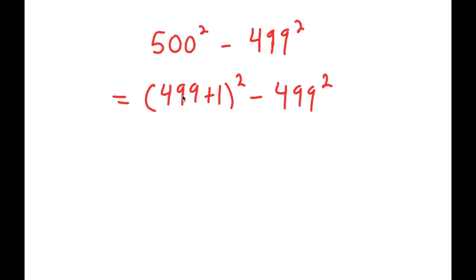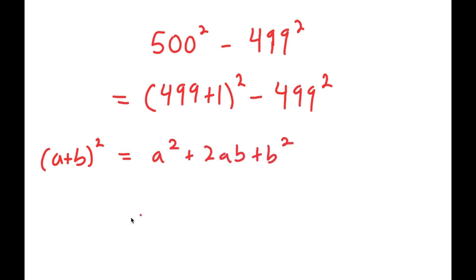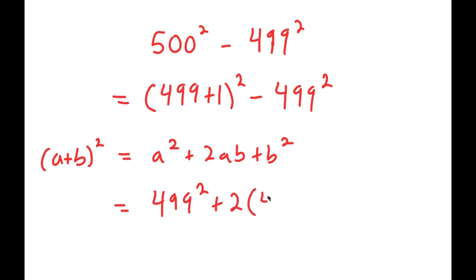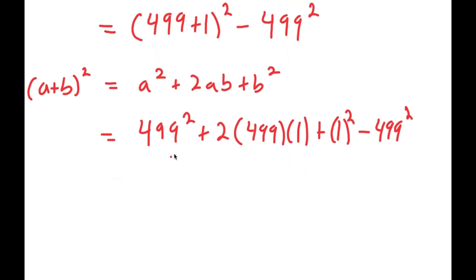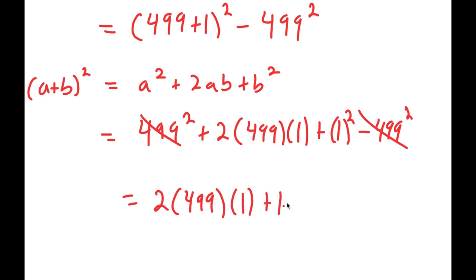If I have something in the form a plus b squared, this is equal to a squared plus 2ab plus b squared. So 499 plus 1 squared turns into 499 squared plus 2 times 499 times 1 plus 1 squared, and I have this minus 499 squared. Now I can cancel out 499 squared and negative 499 squared.